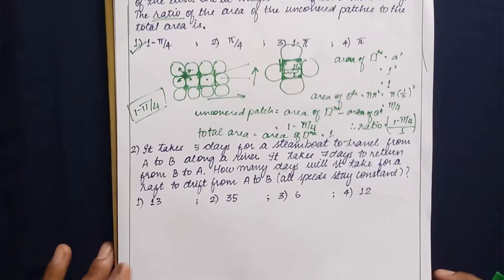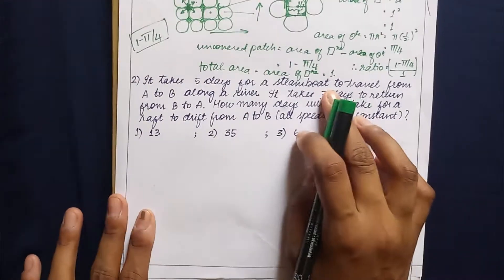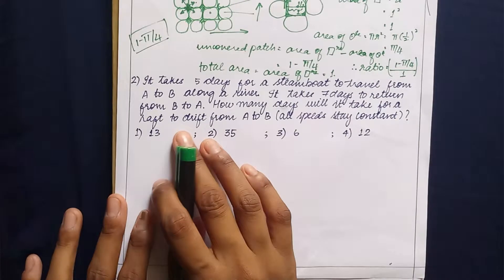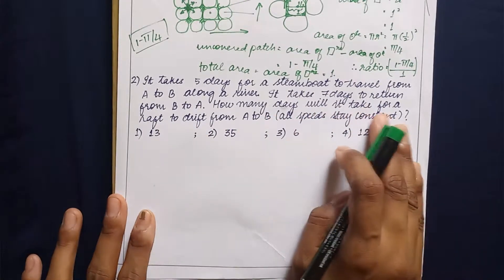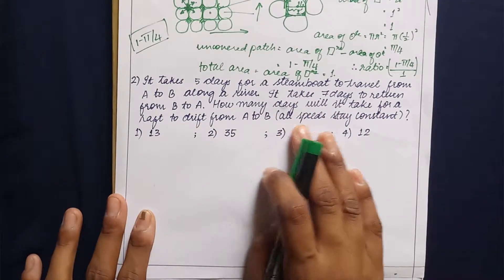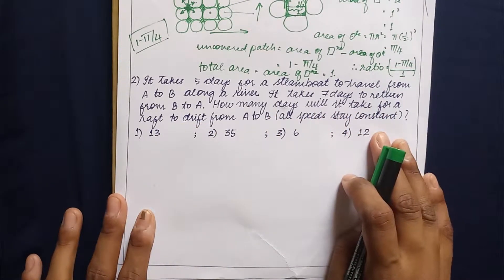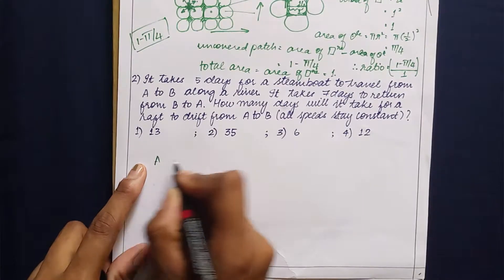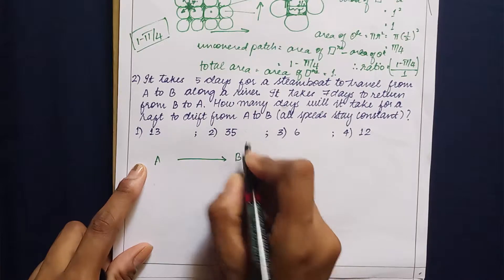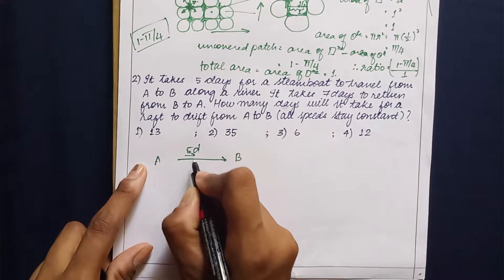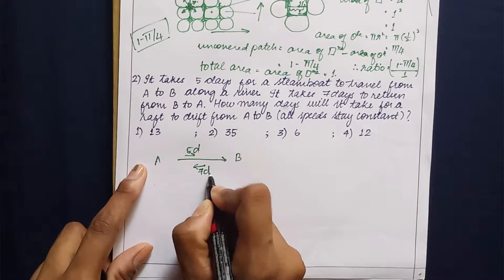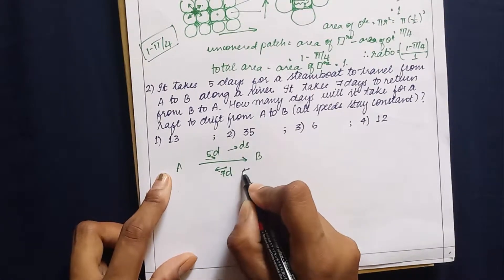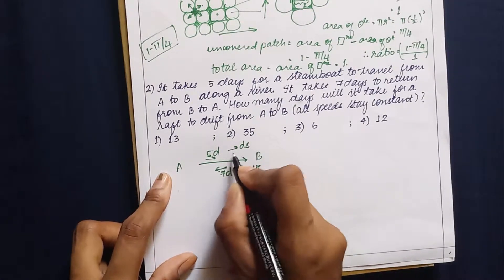Moving on to the second question. It takes 5 days for a steamboat to travel from A to B along a river, and 7 days to return from B to A. How many days will it take for a raft to drift from A to B when all speeds stay constant? From A to B takes 5 days and B to A takes 7 days, meaning A to B is downstream and B to A is upstream, since upstream takes more time.